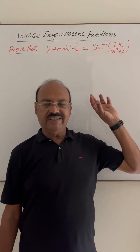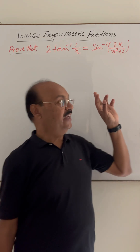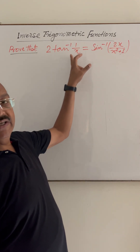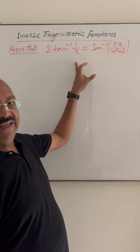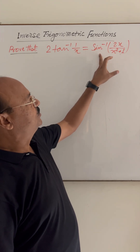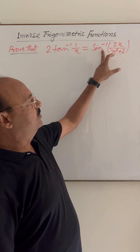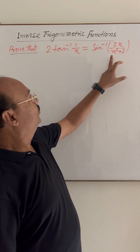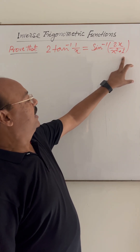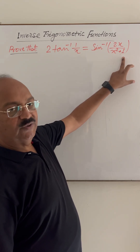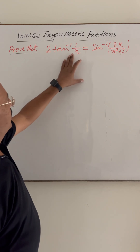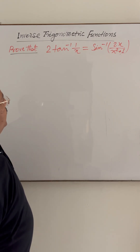The question is: prove that 2 tan inverse of 1 by x is equal to sin inverse of 2x upon x square plus 1. Let us start with the left hand side.